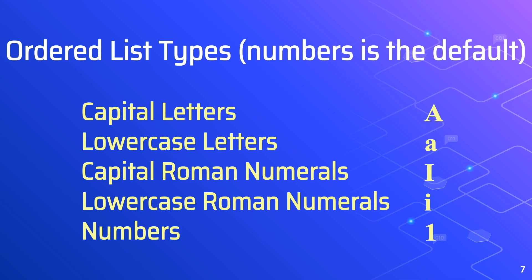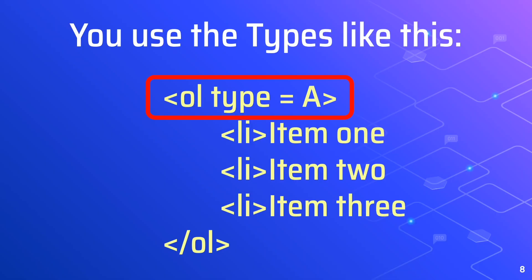Please pay close attention to these particular commands when applying to HTML. You use the types like this: we have the opening OL tag, type equals A for capital letter, and below are the list items, then we have the closing OL tag.